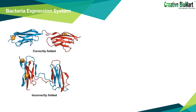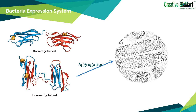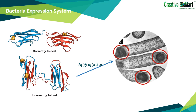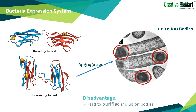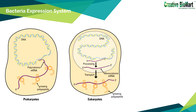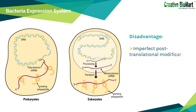However, there are many shortcomings of the prokaryotic expression system. Not all proteins are soluble, and incorrectly folded proteins formed in the cytoplasm can form insoluble aggregates called inclusion bodies, which leads to difficult purification. Moreover, the post-translational modification process of the prokaryotic system is imperfect, and the biological activity of the expressed product is low. Thus, other more sophisticated systems are also being developed, such as systems that may allow expression of proteins previously thought impossible in E. coli, for example, glycosylated proteins.